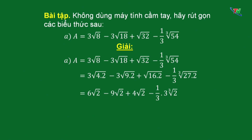√4 ra ngoài căn thành 2 và nhân với √2 thì thành 6; √9 ra ngoài căn thành 3, nhân với √2 thành 9; √16 ra ngoài căn thành 4. Còn căn bậc 3 của 27×2, thì 27 ra ngoài căn bậc 3 ta được 3. Đến đây 3 hạng tử đều có chứa √2, chúng ta đặt √2 ra ngoài, rút gọn 1/3 với 3. Kết quả cuối cùng là √2 - ∛2. Lưu ý: đây là căn bậc 2 của 2 trừ đi căn bậc 3 của 2 - 2 căn bậc khác nhau nên không thể rút gọn với nhau.